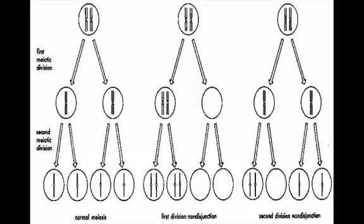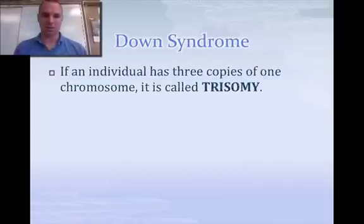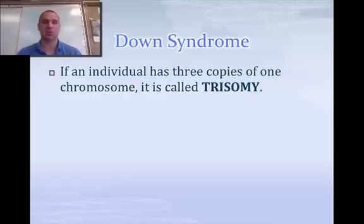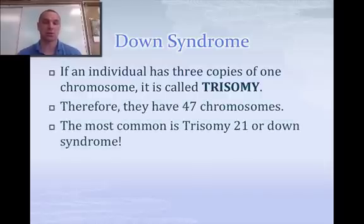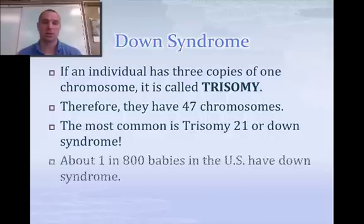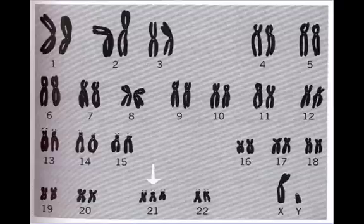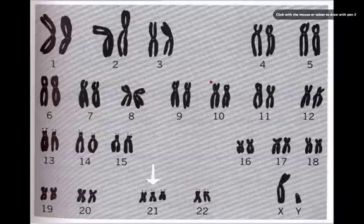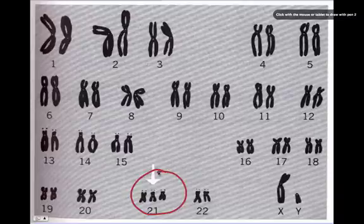Down syndrome occurs when an individual has three copies of one chromosome — it's called trisomy — giving them 47 total chromosomes. The most common type is trisomy 21, occurring in about one in every 800 births. Here on screen is a karyotype showing Down syndrome; if you look at the bottom of the karyotype you can see the extra chromosome 21. This individual has Down syndrome and is a boy. That concludes video 15.